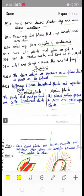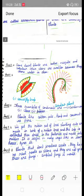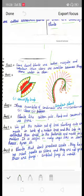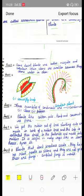Next question is what are fungi? Name the simplest fungi. The answer is plants that don't produce seeds, they have no real roots or stem, and they are not green. These are fungi. The simplest fungi is mold.